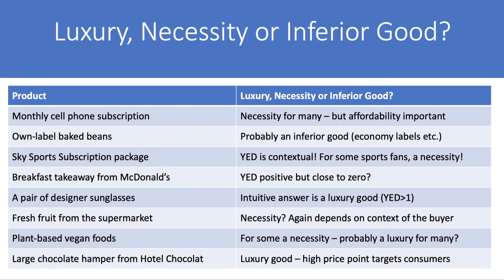What about a breakfast takeaway from McDonald's? Looking at income elasticity for sit-down restaurants compared to fast food, my instinct is that it's probably positive but perhaps close to zero. For many people, the amount they spend at McDonald's isn't linked to their income — it's often just habitual choice. A pair of designer sunglasses is probably a luxury good — income elasticity greater than plus one. Fresh fruits are probably a necessity with an income elasticity of less than one, though context of the buyer matters. Plant-based vegan foods — lots of companies are gearing up to sell more of these. For some, already a necessity they'll buy regardless of price or income; for others, a luxury product they may consume as income rises. Whereas a large chocolate hamper from Hotel Chocolat is clearly a luxury good — their high price point compared to supermarket chocolates targets customers with greater disposable income.